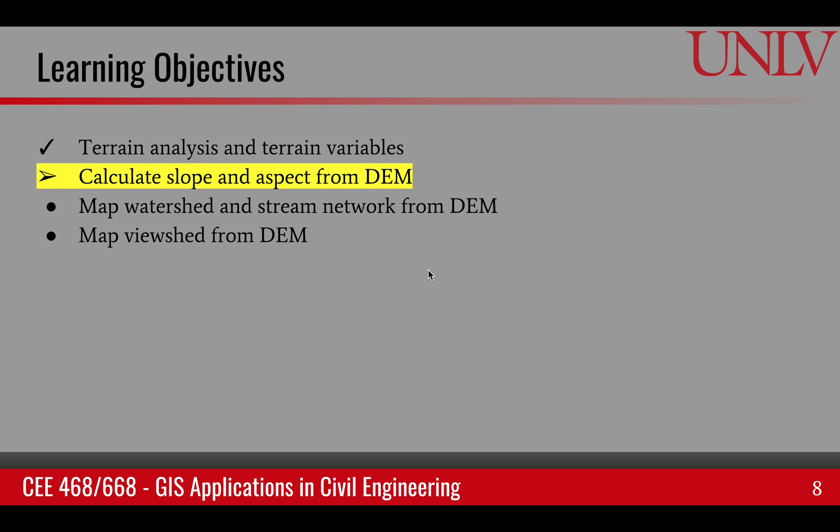The next learning objective is how to calculate two specific terrain variables called slope and aspect. These are typically calculated from DEM.